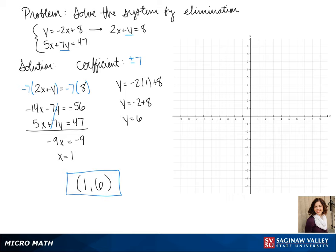Now we can graph our system to see what it looks like. In our first equation, it's already in slope-intercept form. So we can find our points and then connect them.